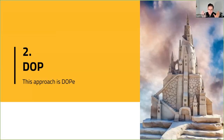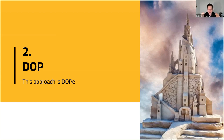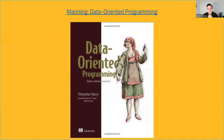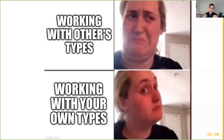These three problems share a single root cause, and wouldn't it be nice to have a uniform approach to reason about all of them? This tool is called data-oriented programming. It's described in a book by Yonathan Sharvit — apologies for any mispronunciation — but I'll quickly explain how it relates to Haskell.